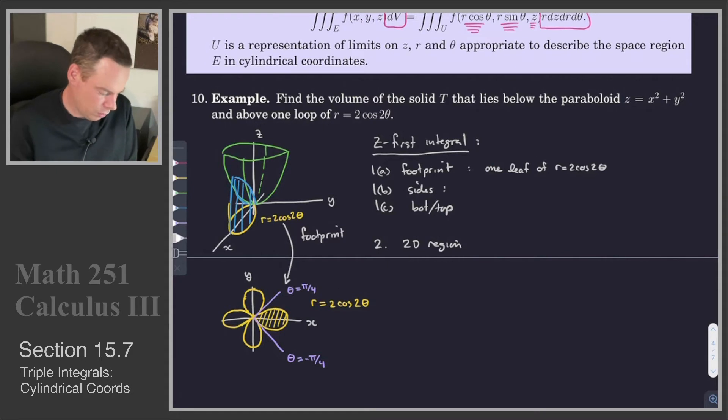So what is our footprint? Our footprint is one leaf of R equals 2 cos 2 theta. Our sides, what are our sides? I've actually drawn them in blue in the diagram. What is our top and bottom? We're doing Z first. Z is above zero, but below our paraboloid x squared plus y squared. But in terms of cylindrical coordinates, x squared plus y squared, that's R squared. What are our sides? Our sides are given by R is equal to 2 cos 2 theta. Those are the blue sides there. And then for this arbitrary Z value. So it's a set of all R theta Z values which satisfy this equation. And again, notice there's no Z variable.